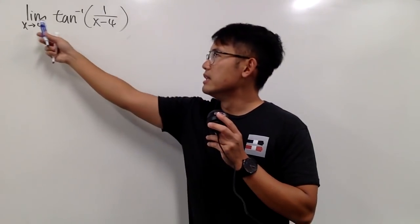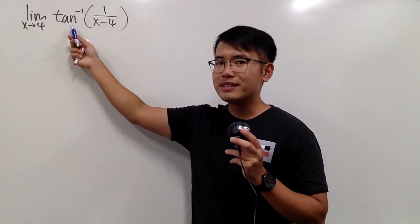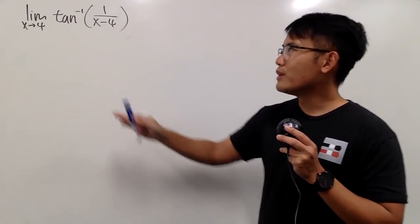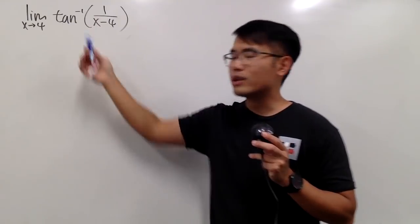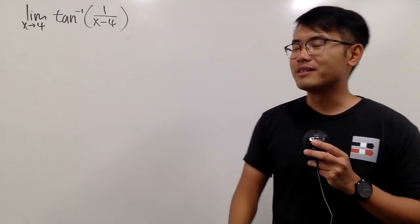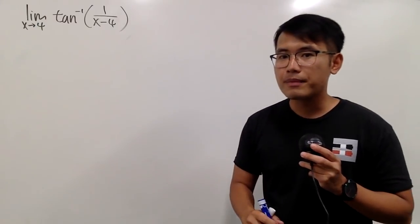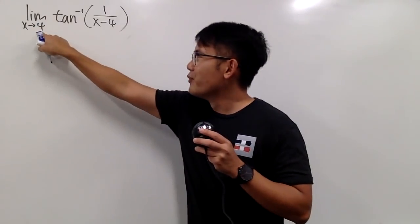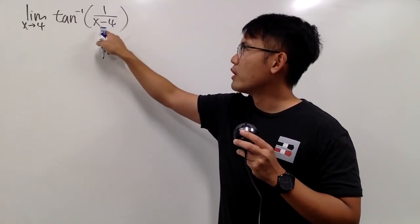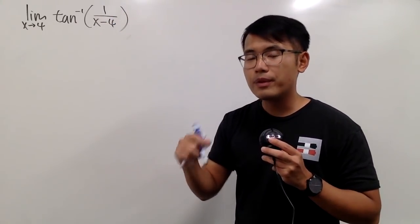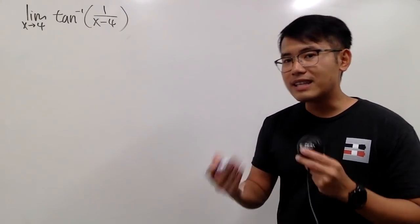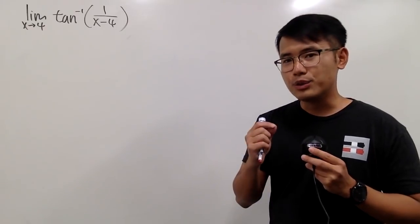I'll show you how to calculate this limit: the limit as x approaches 4 of inverse tangent of 1 over (x minus 4). This is just the inverse tangent notation — sometimes written as arctan — both mean the same thing. If we plug 4 into x, we get 1 over (4 minus 4), which is 1 over 0. That's the nonzero over zero situation.